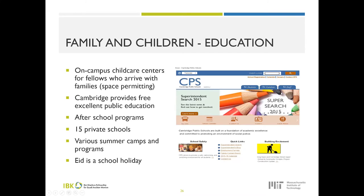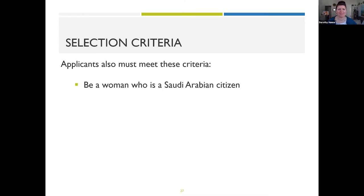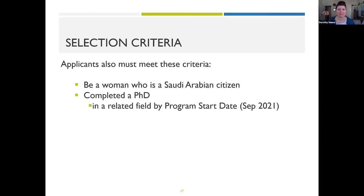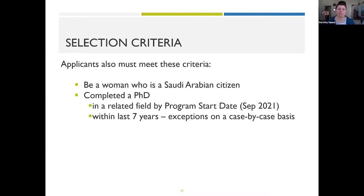Thank you, Nadia. Now the criteria: if you've been wanting to apply, here's what you need. First, you must be a woman who is a Saudi Arabian citizen. You must have completed your PhD in a related field — if you're still working on your PhD, you just need to have graduated by September 2021. If you completed your PhD more than seven years ago, it's unusual for MIT to take postdocs in that situation, but we can work with you on a case-by-case basis.